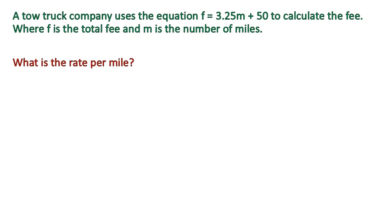I'll show you what that means. What is the rate per mile? Well, let's take a look. The total fee, m is the number of miles. Okay, so our total fee is f. The total fee is 3.25 times m plus 50. So it's 3.25 times every mile. So our rate per mile is 3.25, or $3.25 per mile. That's the cost per mile.